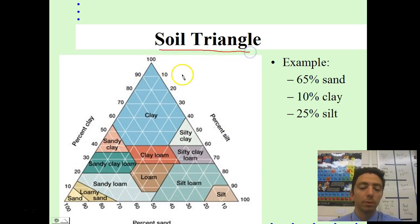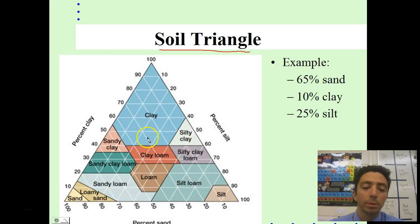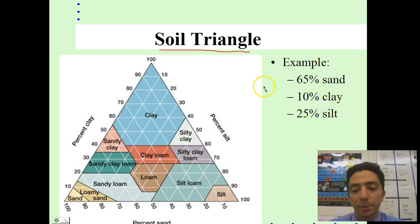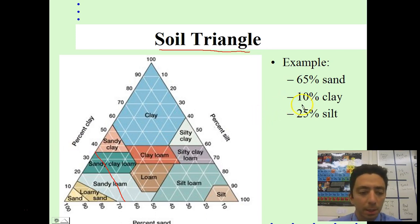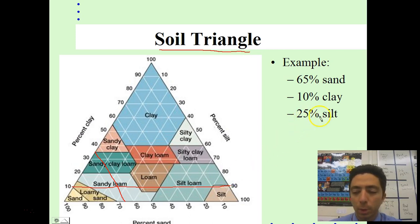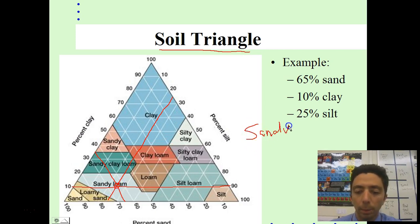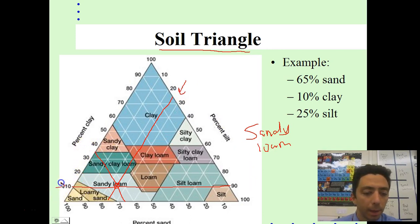The soil triangle is a useful device for determining the type of soil. The three major components are sand, clay, and silt. For example, with 65% sand, 10% clay, and 25% silt, you find each value on its respective axis and trace the lines — where they intersect identifies your soil type. In this example, the result is sandy loam. Arrows on the triangle are always read to the left.